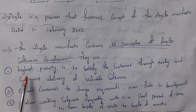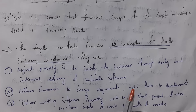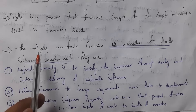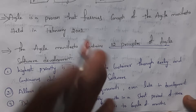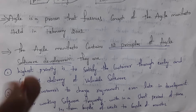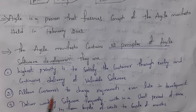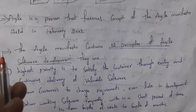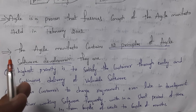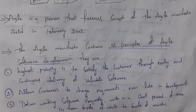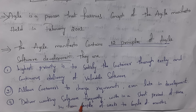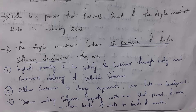The first principle is: highest priority is to satisfy the customer through early and continuous delivery of valuable software — deliver software fast and keep adding new features. The second principle: allow customers to change requirements even late in development. The third principle: deliver working software frequently within a short period, from a couple of weeks to a couple of months — ideally within 2 to 4 weeks. The fourth principle: business people, developers, and testers must work together daily throughout the project.